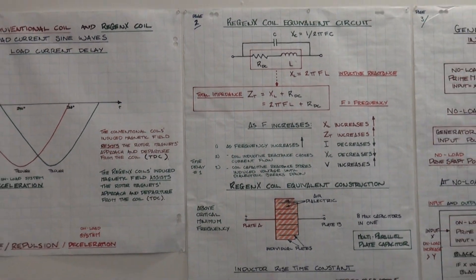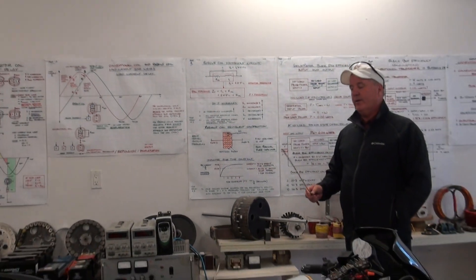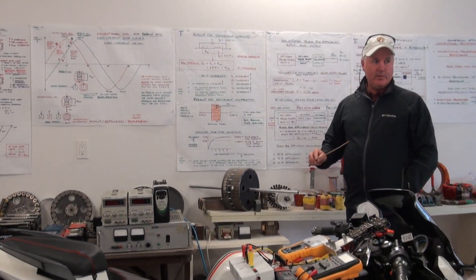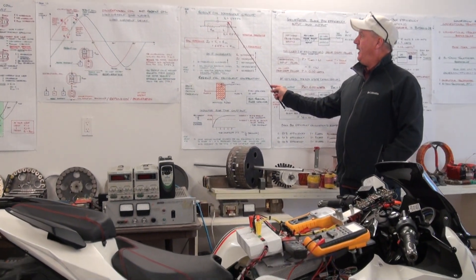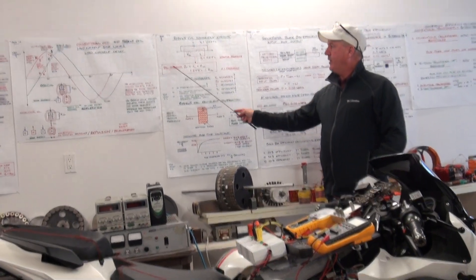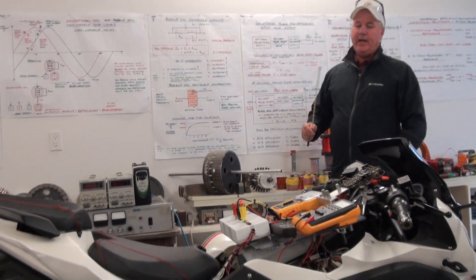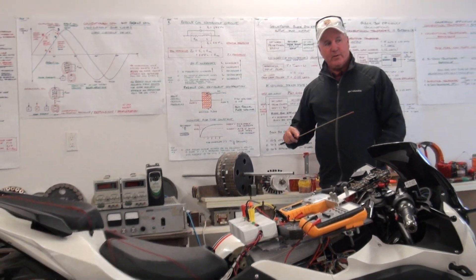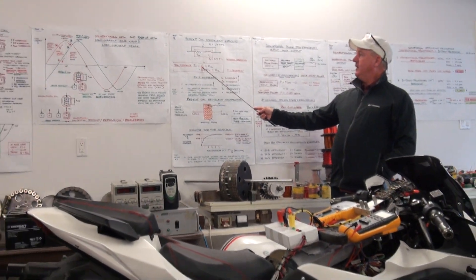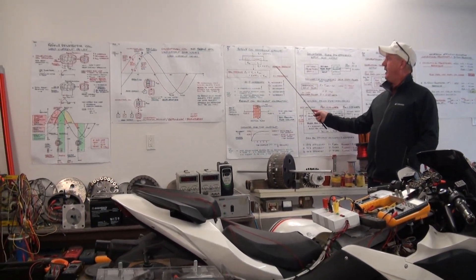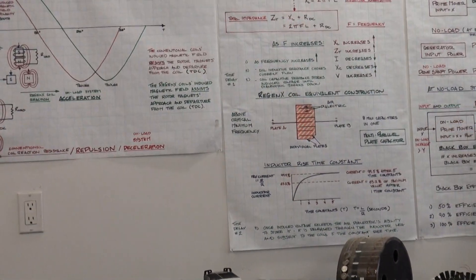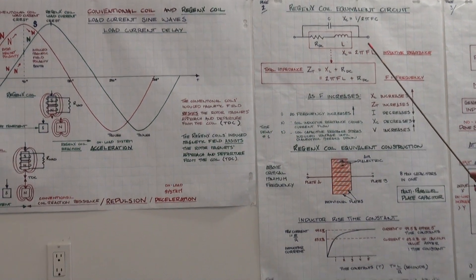In a normal generator coil, the capacitance is negligible. The total impedance — that's the AC resistance to current flow — ZT is the inductive reactance plus the DC resistance. And the inductive reactance of the coil is 2πFL.